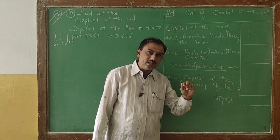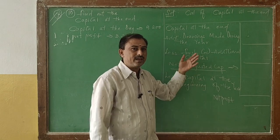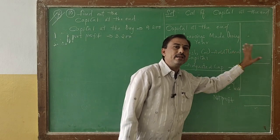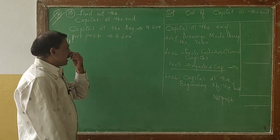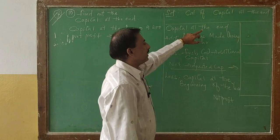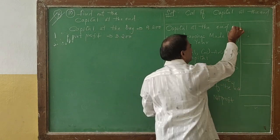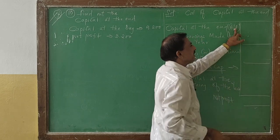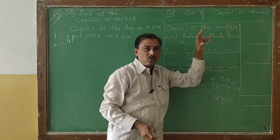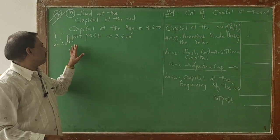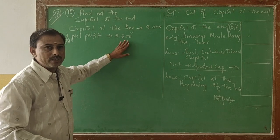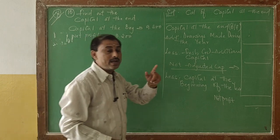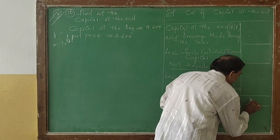Any information given in the problem, we write the amount. If anything is not given, we put nil. They are asking us to find out the capital at the end, so we put that as the balancing figure — that is what we are finding out as our result. Net profit given is 3,200, so we write 3,200 here.